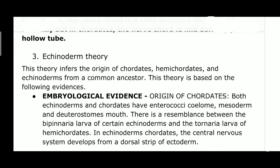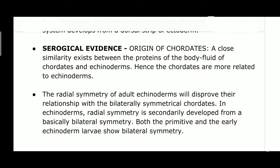The echinoderm theory is the mostly accepted theory. It supports the statement that hemichordates and echinoderms originated from a common ancestor. This theory is based on two major evidences: embryological evidence and serological evidence. Regarding embryological evidence, echinoderms and hemichordates both share similar characters such as enterocoelous mesoderm formation and deuterostomic mouth development.